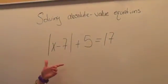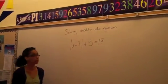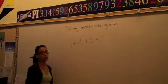Our absolute value equation is the absolute value of x minus 7 plus 5 equals 17. What we want to have to do is try to get the absolute value by itself.